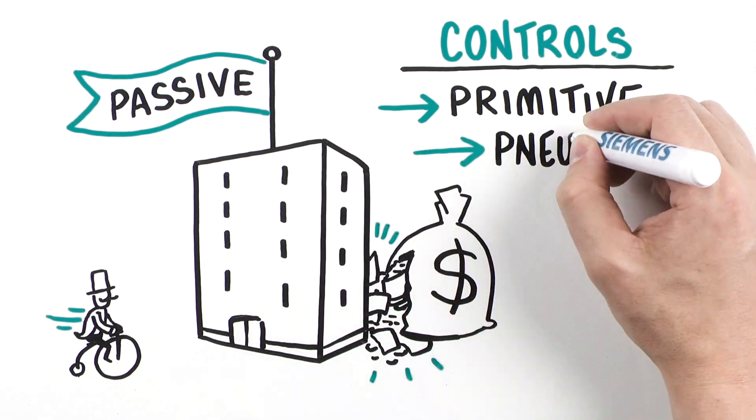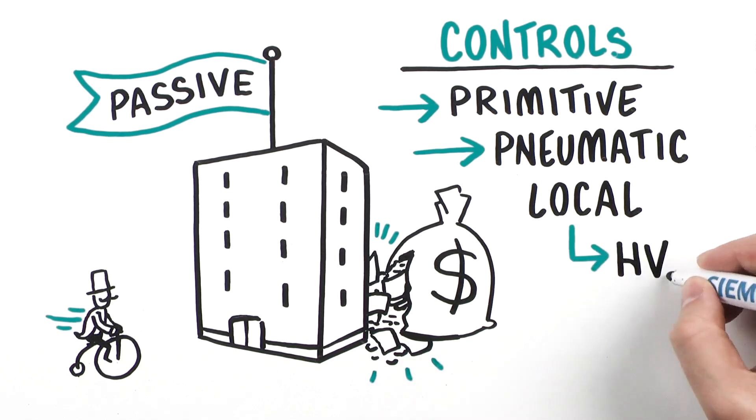Early controls were primitive, primarily pneumatic, restricted to local control of an HVAC system.